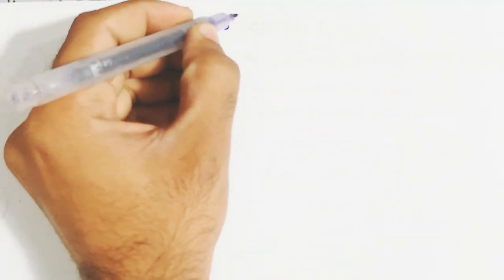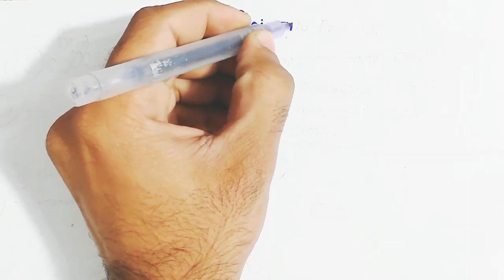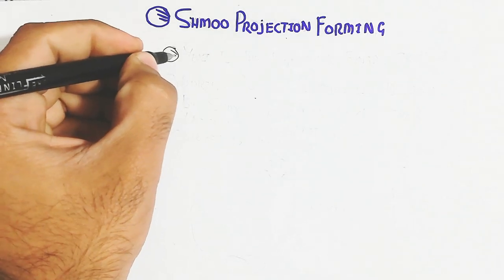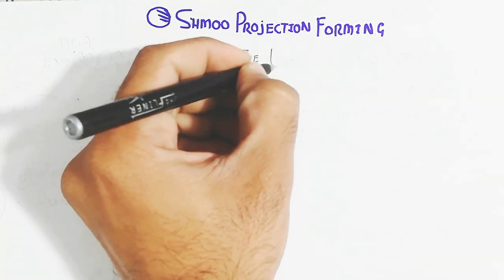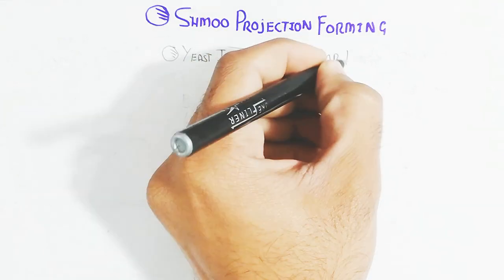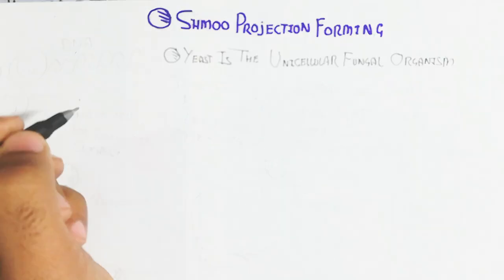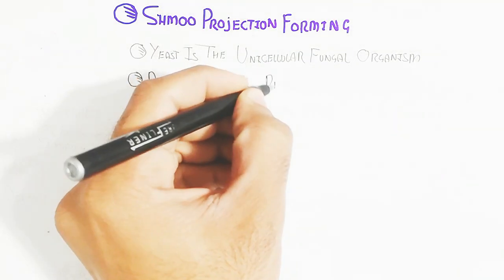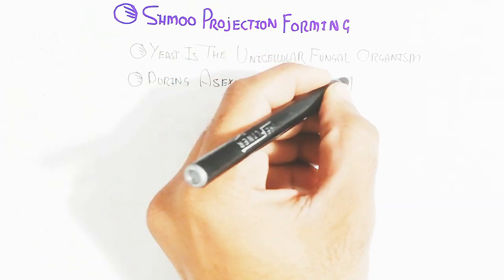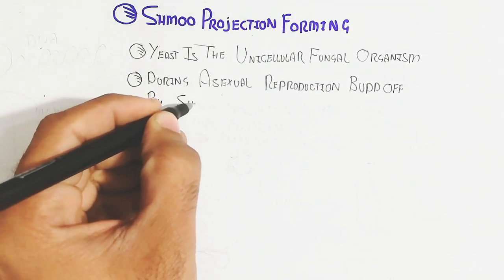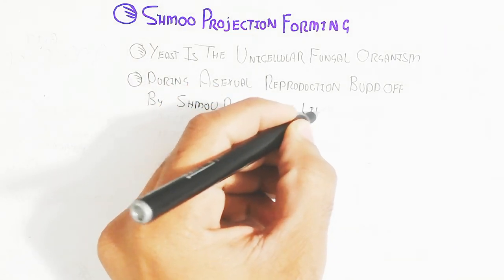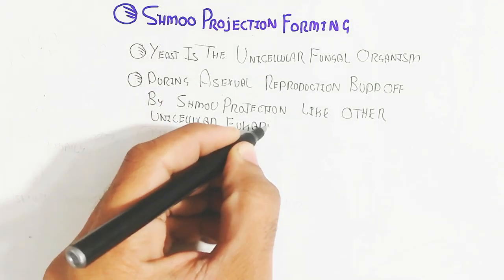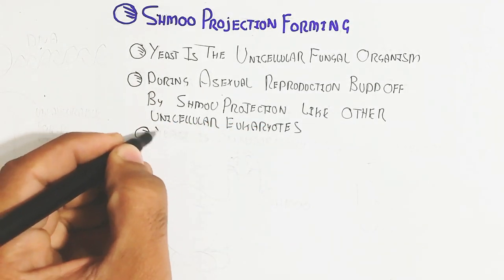Hello, in this video we will understand about the shmoo projection forming in the yeast — what is the shmoo projection. Yeast is the unicellular fungal organism. During asexual reproduction it buds off, but the shmoo projection occurs in sexual reproduction, not asexual reproduction. Yeast is a unicellular eukaryote used anaerobically for fermentation of alcohol from glucose.